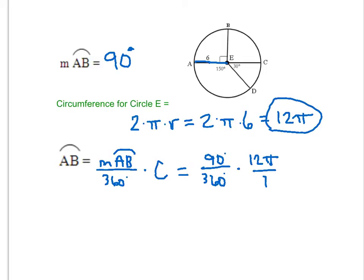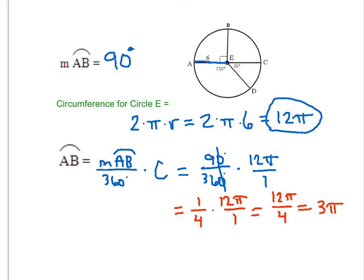To simplify 90 over 360, I can cancel the zeros to get 9 over 36. Nine goes into 9 once and into 36 four times, giving us 1/4. Multiplying 1/4 times 12π gives 12π over 4, and reducing we get 3π. So the measure of arc AB is 90 degrees, but the length of arc AB — the distance walking from A to B — is 3π.